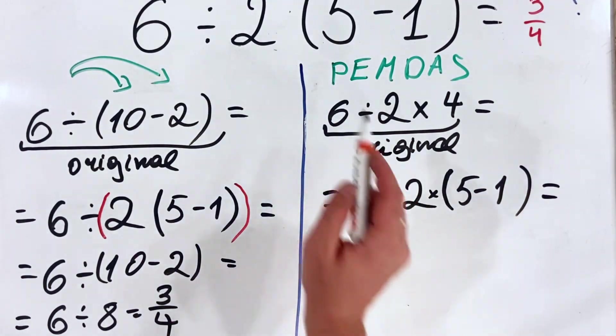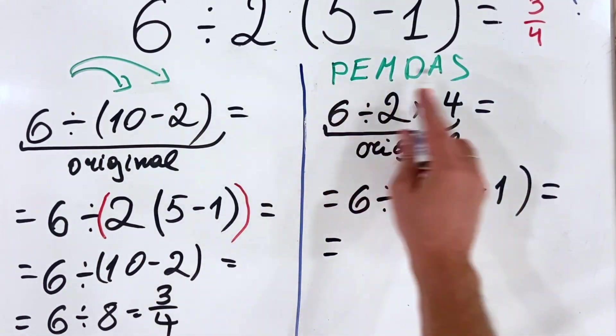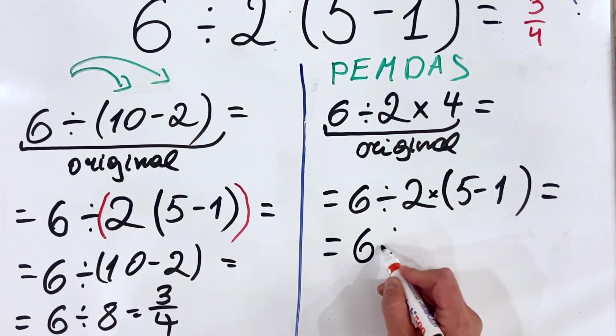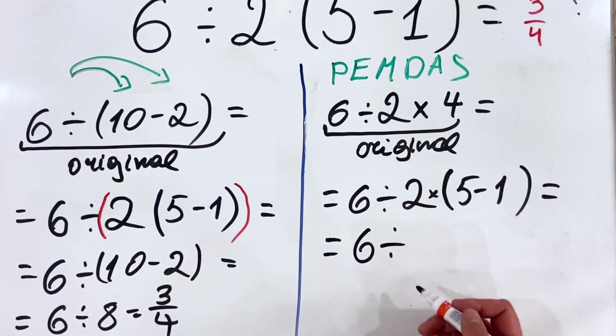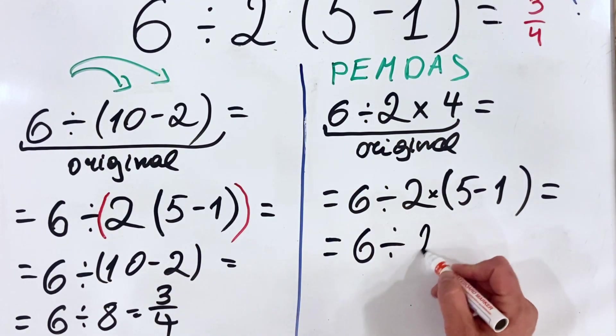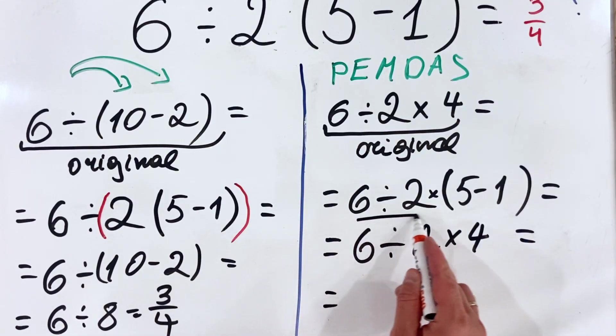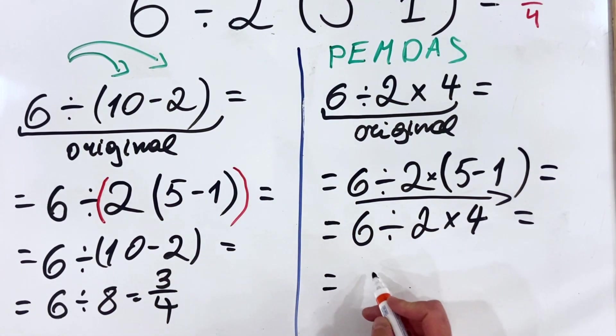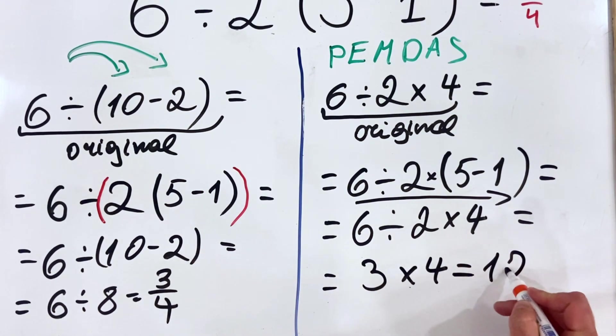So what we have? We have this equals to this. So to calculate, then, of course, we use PEMDAS as the order of operation. So we have 5 minus 1 is 4, 2 divided by 4, so we have 2 multiplied by 4. And, of course, now we need to do it from left to right. 6 divided by 2 is 3 multiplied by 4, and it's 12.